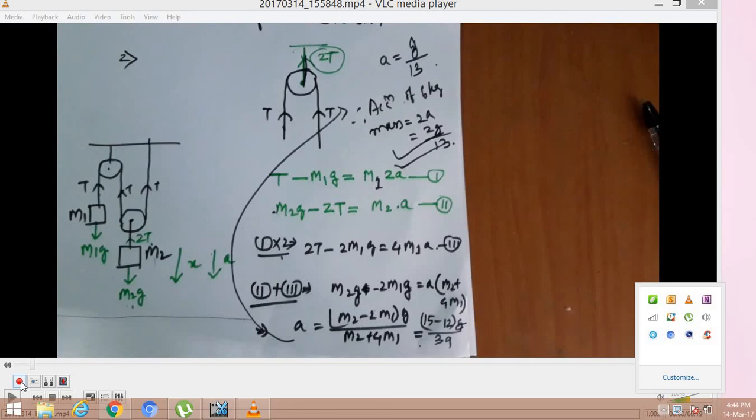The answer is: the acceleration a equals g/13. So the acceleration of the 6 kg mass is twice a, which is 2g/13. So the required answer is 2g/13. Please like and subscribe, thank you.